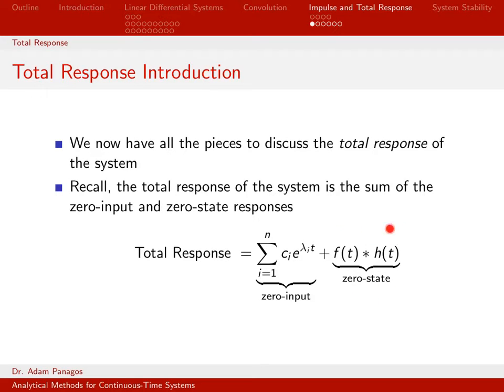So then we spent a lot of time practicing how to actually evaluate convolution. How do you do f of t convolved with h of t? So lots of pieces: How do you compute the zero input? How do you compute the impulse response? How do you do convolution?